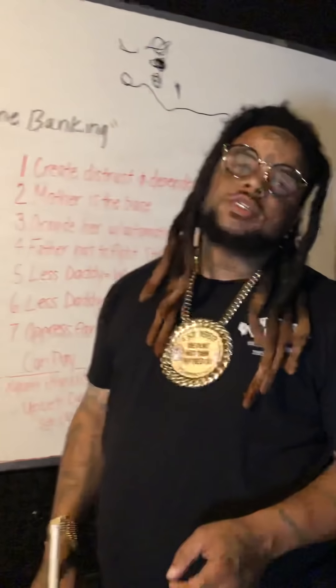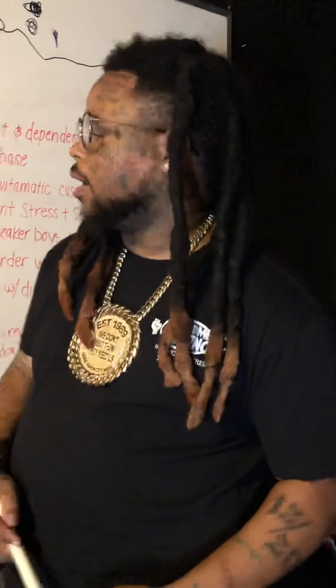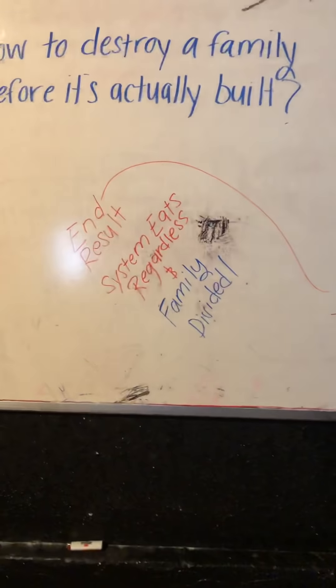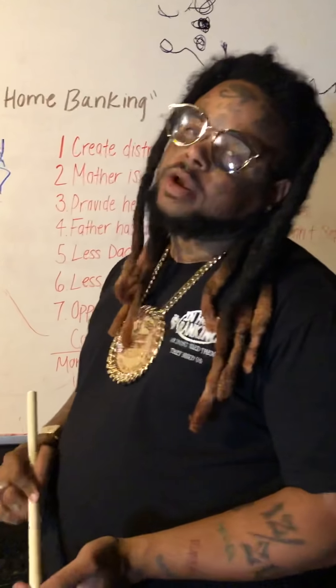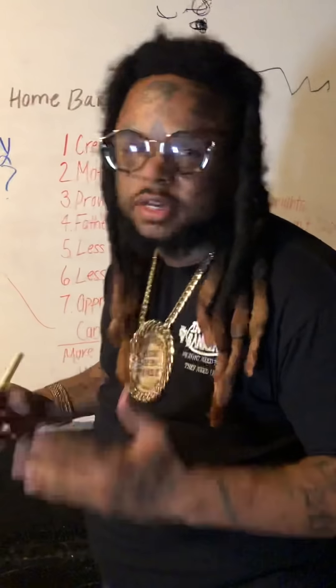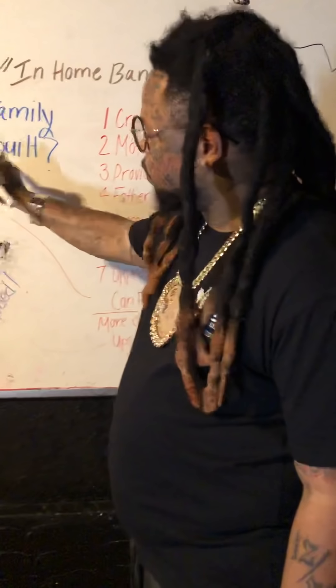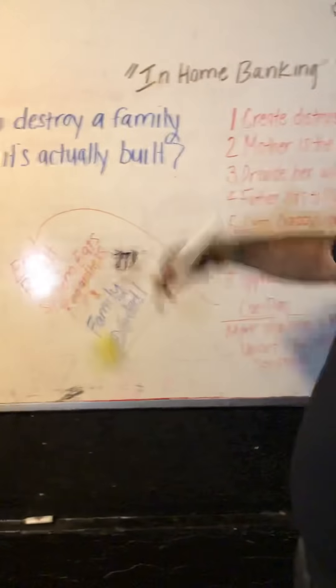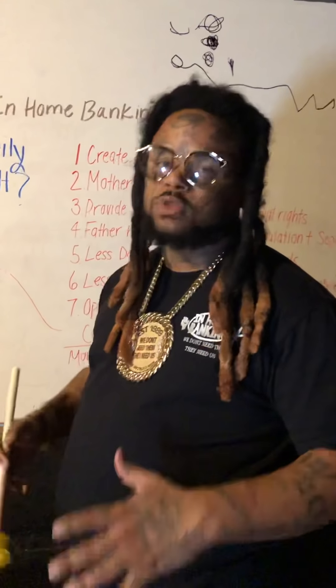End result: the system is gonna eat regardless. Whether daddy can pay or not, they're gonna get the money — when he renews his license, when he bonds out of jail, through garnished wages. When he can pay, they get their cut there too. The family is still divided. In-Home Banking is about assessing the system, figuring out how to emulate the system but doing it with integrity. I've been telling you guys: we don't need them, they need us. This was never created with us in mind.